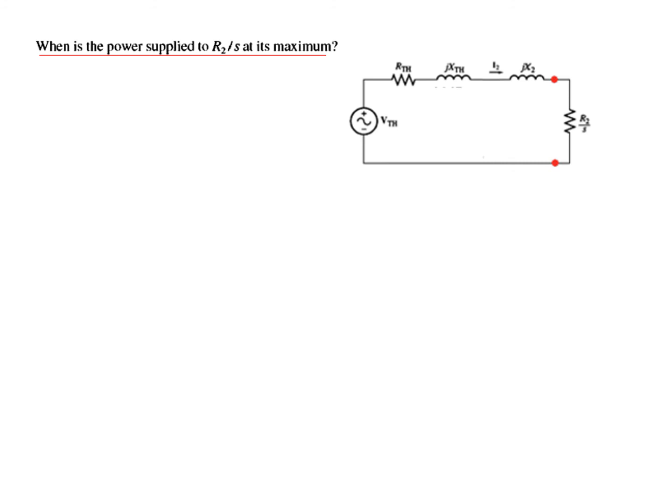The next question is when is the power supplied to R_2 over s maximum. Since this is the only resistive element consuming power, the question is when will power transfer to this be maximum. We know from the power transfer theorem that for maximum power transfer, Z_source has to be equal to Z_load. That means this whole thing is now we are considering it to be source, equals R_2 over s. And from here we get s equals R_2 over this value. So this is for the maximum power, that is why we are calling s maximum. And this is the condition for maximum power transfer.